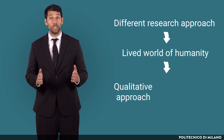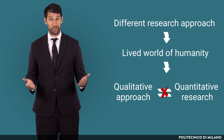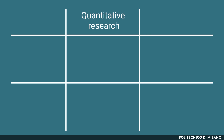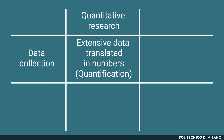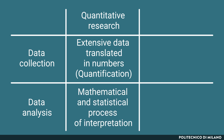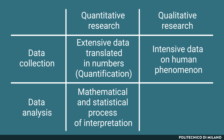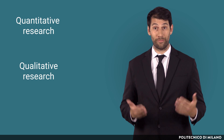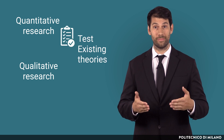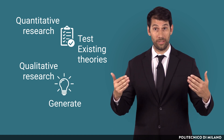As a consequence, the qualitative approach differs significantly from quantitative research. In quantitative research, the data collection process involves extensive data translated into numbers — a process called quantification — analyzed through a mathematical and statistical process of interpretation. On the other hand, qualitative research requires intensive data on human phenomena, collected from multiple sources of evidence, and analyzed in a non-statistical manner. The paramount goal of quantitative research is to test existing theory, while qualitative research aims at generating or building new theory.